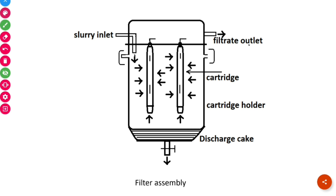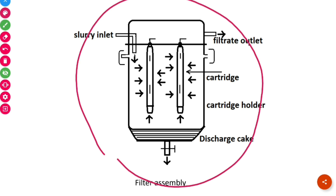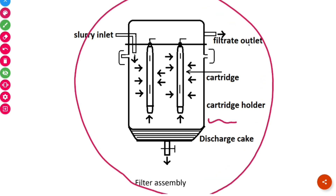Here you can see the pictorial representation of a cartridge unit. Our cartridge filter has a cylindrical configuration. This is the cartridge holder and this is one cartridge unit. Here you can see the slurry inlet, the filtrate outlet, and the discharge outlet. These are the important parts associated with the cartridge filter.